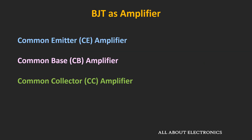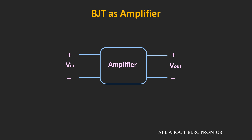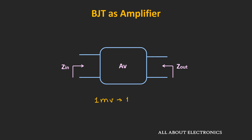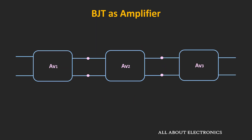In the earlier videos, we have seen how the BJT can be used as an amplifier in different configurations. In each configuration, the amplifier provides a finite voltage gain as well as finite input and output impedance. But many times, this voltage gain may not be sufficient for a particular application. For example, if we want to amplify a 1 mV signal to 1V, then we require a gain of 1000, and a single amplifier will not be able to provide that. So in such a case, we need to use multistage amplifiers.